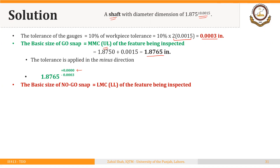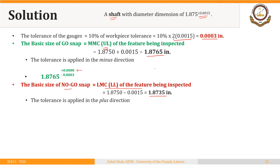The no-go gauge checks the LMC, and the LMC of an external feature is the lower limit. So the basic size of the no-go snap will be equal to the lower limit of the feature — the diameter of the shaft — which is 1.875 minus 0.0015, giving 1.8735 inches. The tolerance is applied in the plus direction to keep the gauge tolerance within the workpiece tolerance zone. So the no-go snap will be dimensioned as 1.8735 plus 0.003, minus 0.